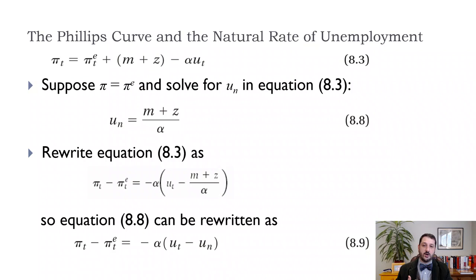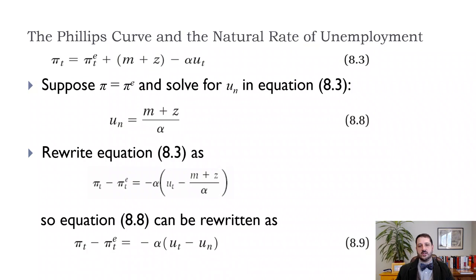These are constants or coefficients in our model. m is the markup, so a higher markup — less competition — leads to a higher natural rate of unemployment. z is our catch-all term, which includes things like unemployment benefits and the minimum wage, though assuming those raise unemployment is something we should measure rather than assume. Alpha comes from regression estimation, and where exactly that coefficient comes from is an important but not fully settled debate.